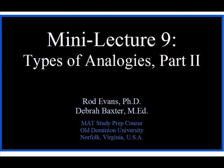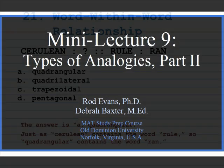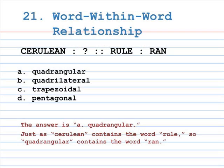We will now continue with the second set of types of analogies. Number 21: word-within-word relationship.